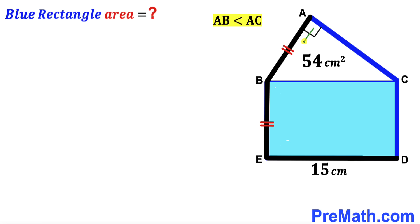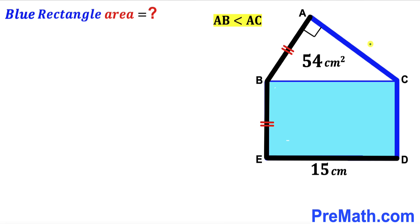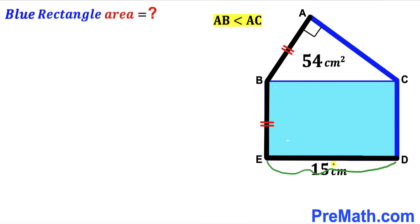Welcome to pre-math. In this video we have got a right triangle ABC and the blue shaded rectangle BCDE put together as you can see in the given diagram, such that side AB length is equal to side BE length. Moreover, the area of this right triangle ABC has been given as 54 centimeter square, the side DE length is 15 centimeter, and bear in mind that the AB segment length is going to be less than the AC segment length. Our task is to calculate the area of this blue shaded rectangle BCDE.